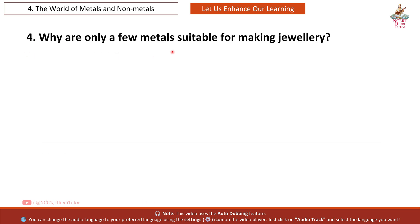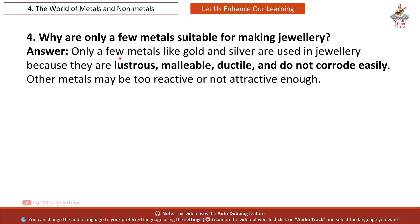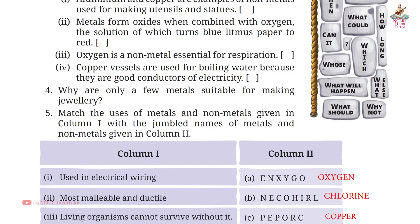Question 4: Why are only a few metals suitable for making jewellery? Answer: Only a few metals like gold and silver are used in jewellery because they are lustrous, malleable, ductile, and do not corrode easily. Other metals may be too reactive or not attractive enough.